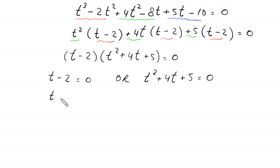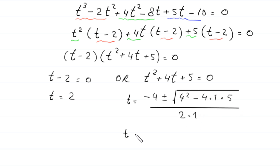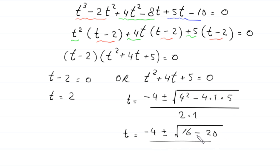From the linear factor we get t equals 2. From the quadratic equation, by the quadratic formula, t equals negative b which is 4, plus or minus the square root of b squared minus 4ac, which is 4 squared minus 4 times 1 times 5, divided by 2 times 1. So t equals negative 4 plus or minus the square root of 16 minus 20, divided by 2.